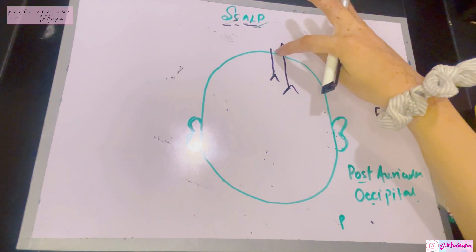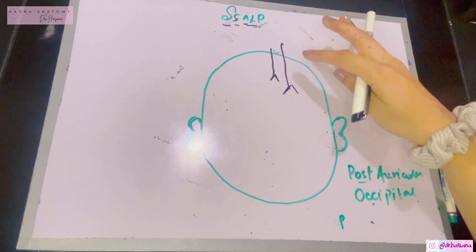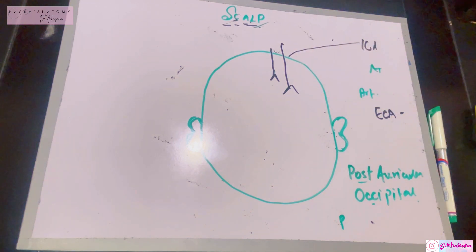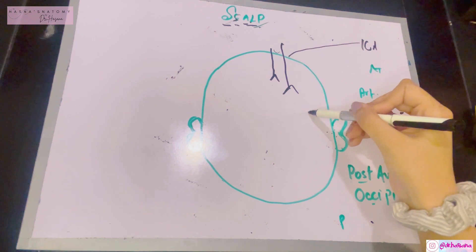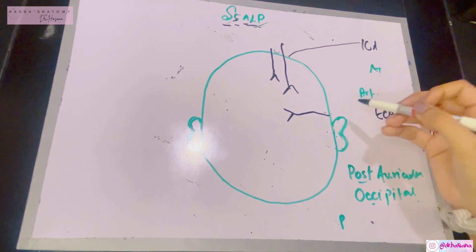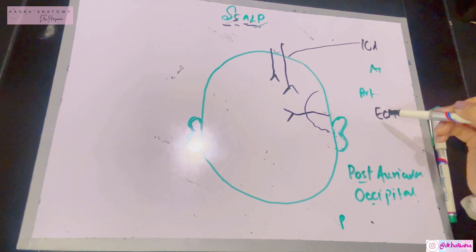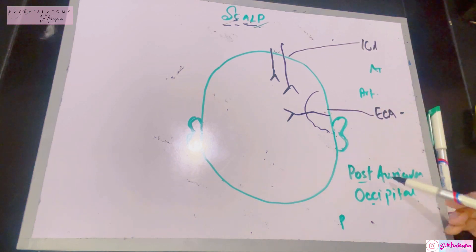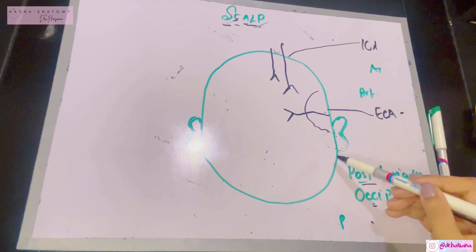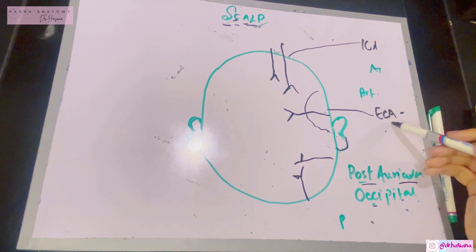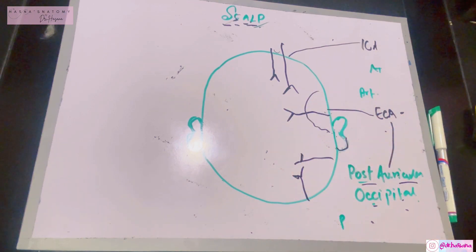From the internal carotid artery come the supratrochlear and supraorbital arteries — supratrochlear medially and supraorbital more laterally. From the external carotid artery comes the superficial temporal artery in the temporal region. Posterior to the auricle, the posterior auricular artery and the occipital artery supply the scalp — both also from the external carotid artery.